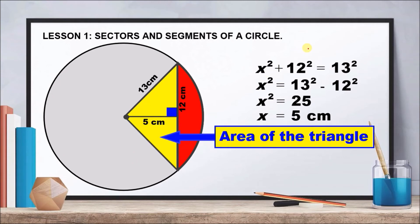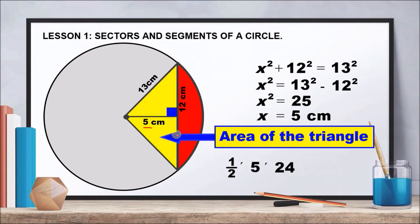Now we can find the area of the triangle. The height is 5 centimeters, and the entire base is 24 centimeters (not 12, because the full base of the shaded triangle is 24 centimeters). Substituting: Area = (1/2) × 5 × 24 = 60 square centimeters. But this is only the area of the triangle, not yet the area of the segment.